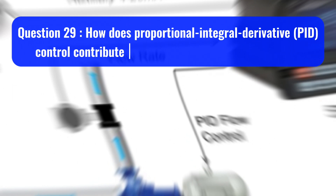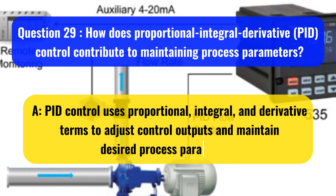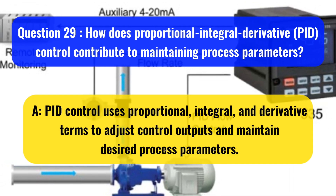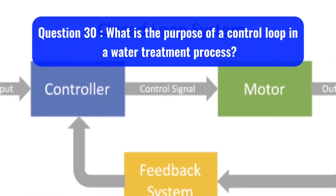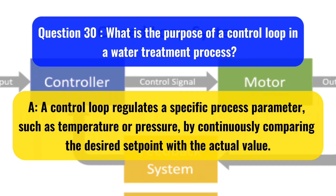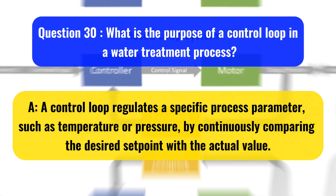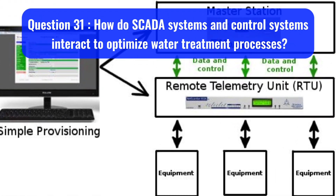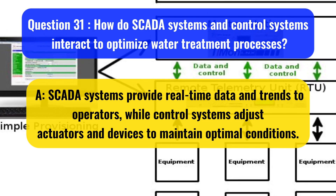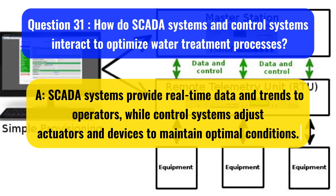Question 29: How does proportional integral derivative (PID) control contribute to maintaining process parameters? PID control uses proportional, integral, and derivative terms to adjust control outputs and maintain desired process parameters. Question 30: What is the purpose of a control loop in a water treatment process? A control loop regulates a specific process parameter, such as temperature or pressure, by continuously comparing the desired setpoint with the actual value. Question 31: How do SCADA systems and control systems interact to optimize water treatment processes? SCADA systems provide real-time data and trends to operators, while control systems adjust actuators and devices to maintain optimal conditions.